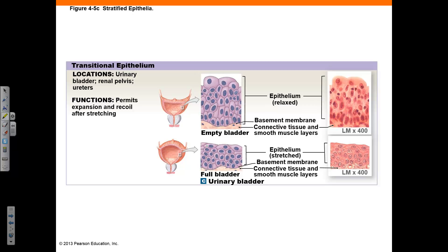Transitional epithelium is stratified and can stretch and recoil. It is found in the urinary bladder, the renal pelvis, and the ureters. The example shown is from the urinary bladder, comparing the empty and full states. Note the difference in cell shape: in the relaxed empty state, cells have more of a cuboidal shape on top, whereas when the bladder is full and the epithelium is stretched, the cells take on a more flattened shape.